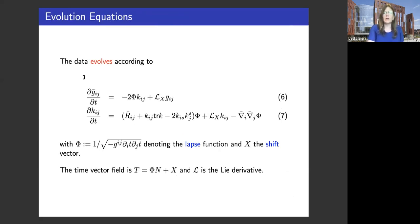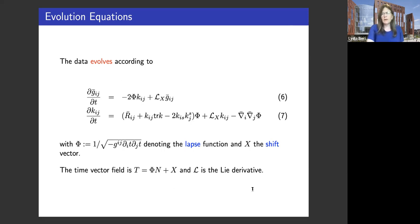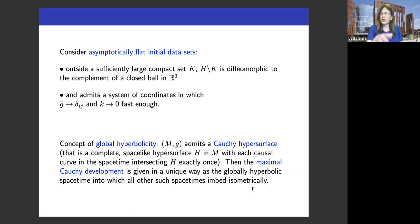If I evolve the initial data g-bar and K, I have some time function. Phi here is my lapse function, and the x vector is the shift vector; this L is the Lie derivative with respect to the shift vector x of these components. Everything with a bar means it's on a spacelike hypersurface. This looks at first sight compact and neat — the Einstein equations are always astonishing in how compact and neat they look, and if you go deeper into the details, there are beautiful structures.